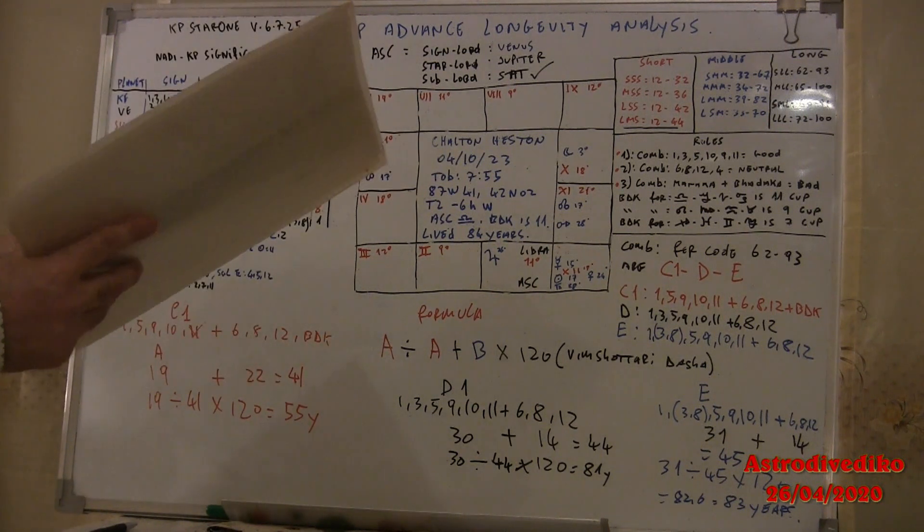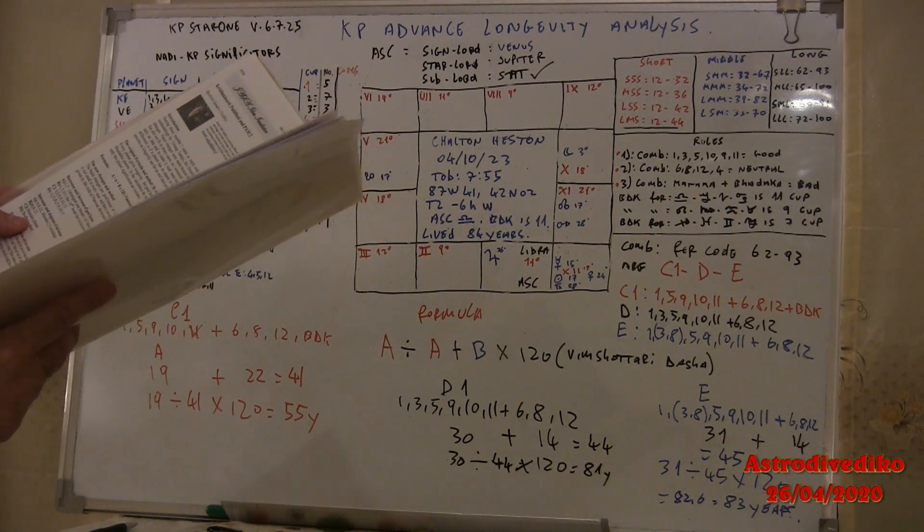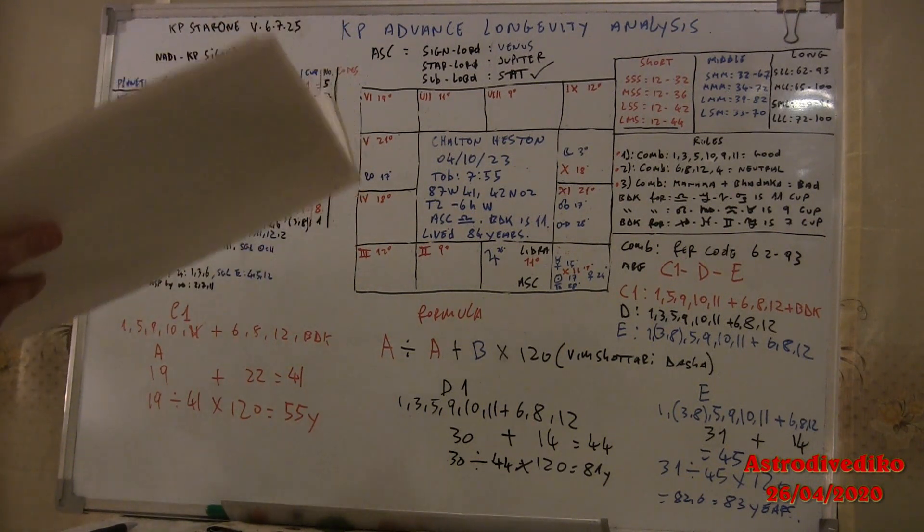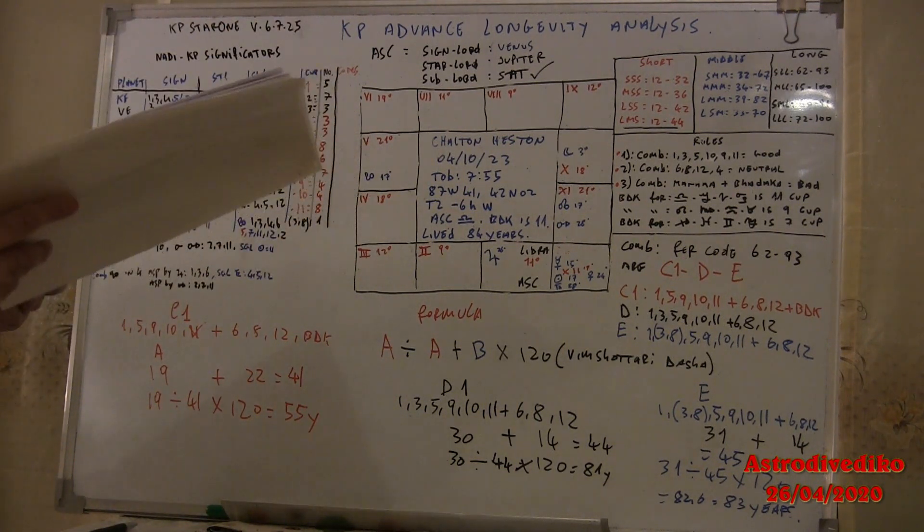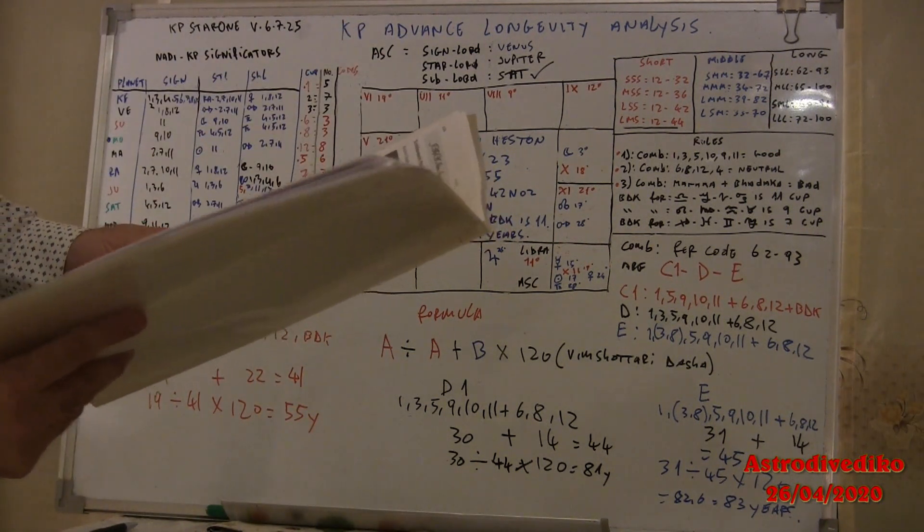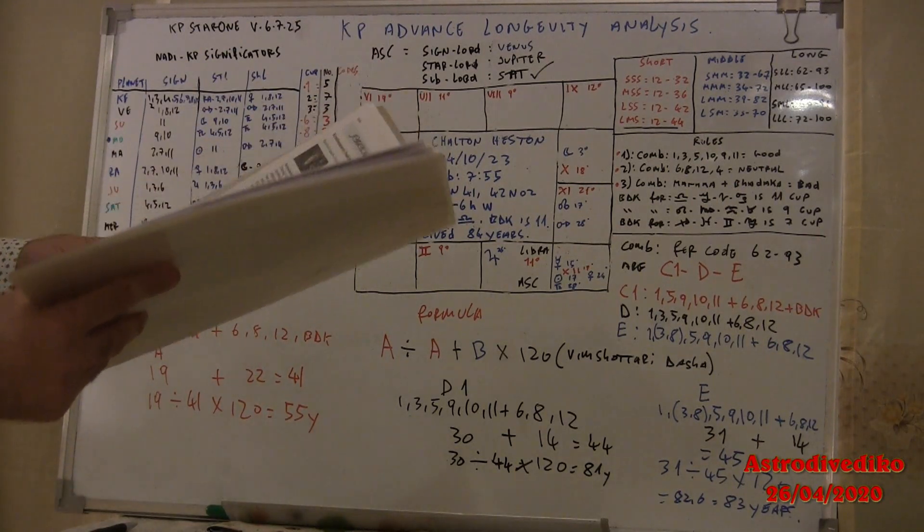The bad houses: the strongest bad houses are combination of 6, 8, 12 plus Maraca and Badaga. The next strongest bad houses are 6, 8, 12. The next strongest bad houses are Maraca planets, and to end, the Badaga planet.